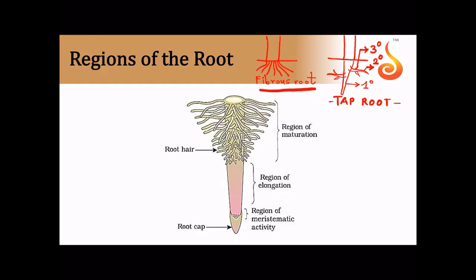Near the tip of the root, you can identify three distinct regions. The very end is covered by a cap-like structure called the root cap, which protects the tip as it grows into the soil. A few millimeters above the root cap is the zone of meristematic activity, where cells have very thin cell membranes, dense cytoplasm, and are actively dividing — these are called meristematic cells.